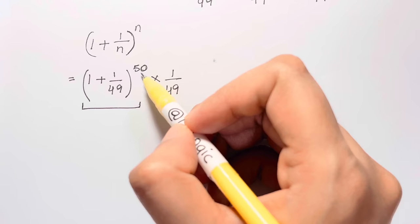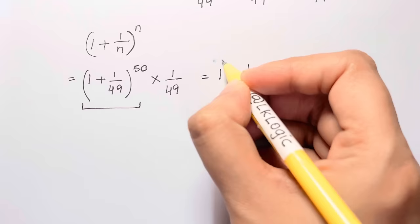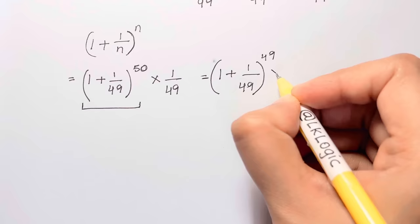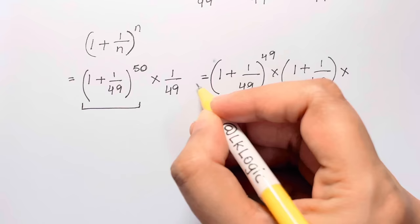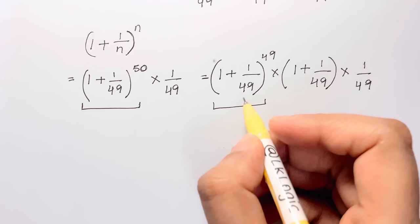We can separate the exponent: consider 50 as 49 plus 1. So we rewrite it as (1 plus 1 over 49) to the power of 49, times (1 plus 1 over 49), times 1 over 49. Now this has the form (1 plus 1 over n) to the power of n.